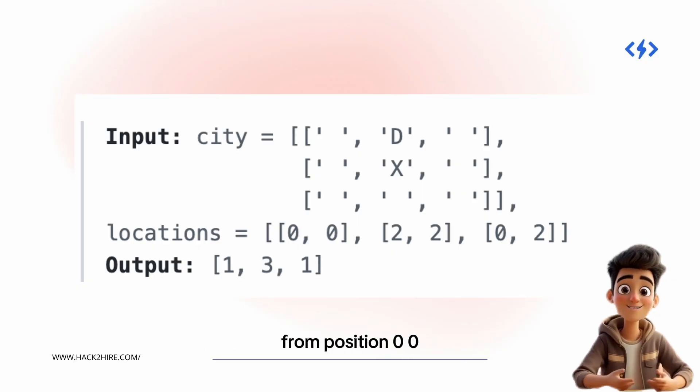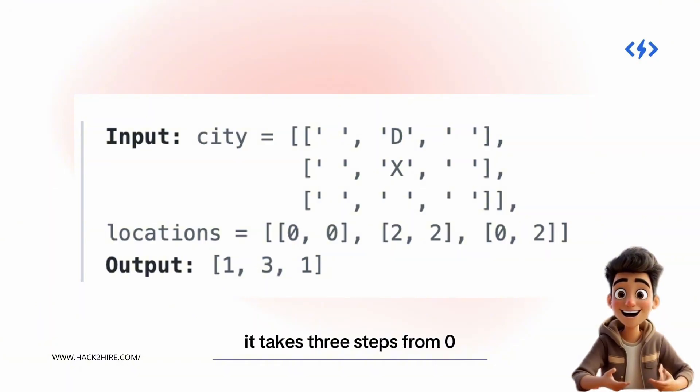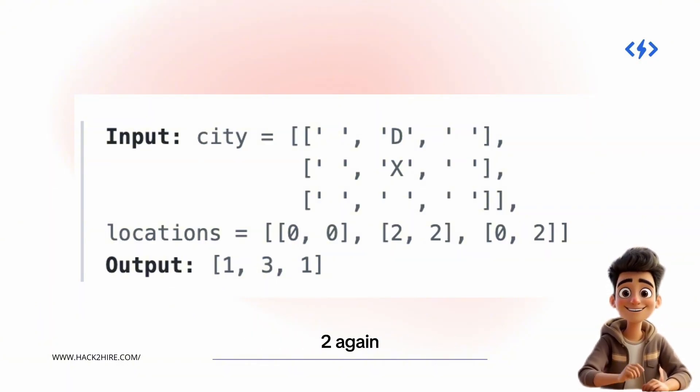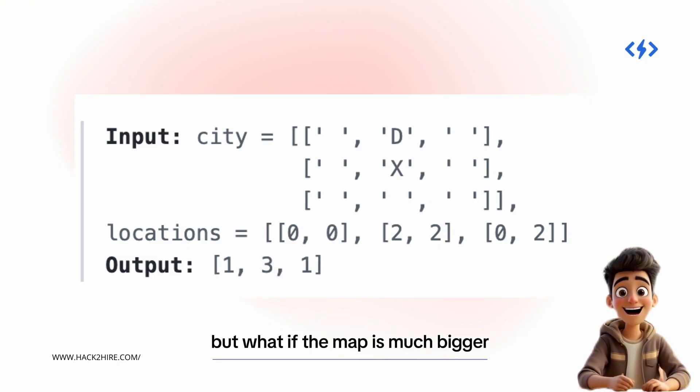Let's look at an example. From position (0,0), it takes 1 step to reach a dashmart. From (2,2), it takes 3 steps. From (0,2), again, just 1 step. Simple, right? But what if the map is much bigger?